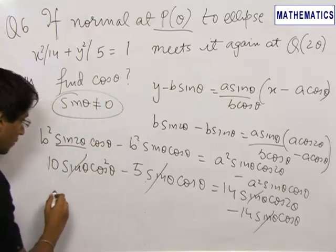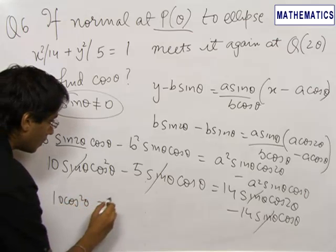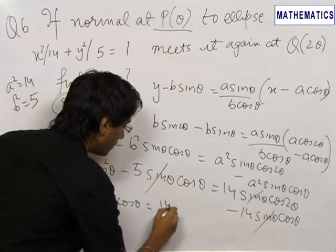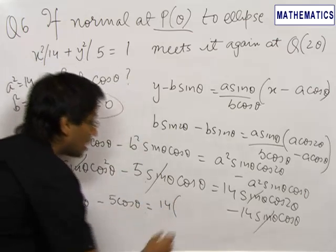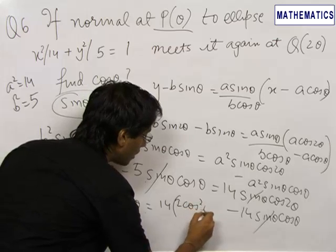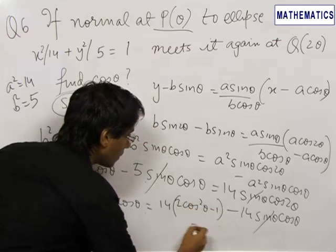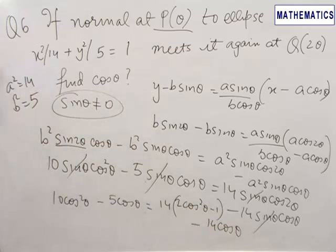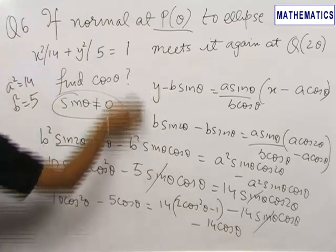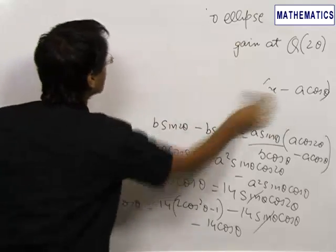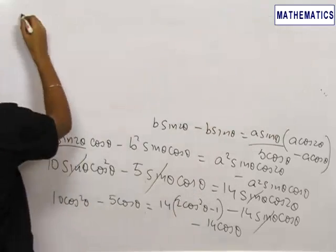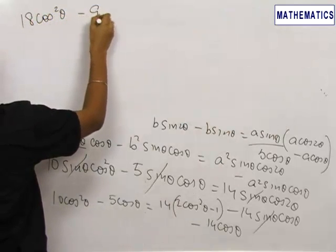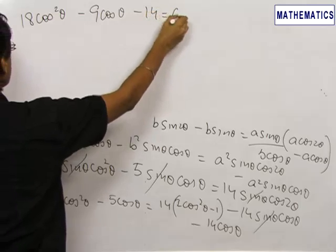Now we have 10 cos²θ minus 5 cosθ equals 14. We write the entire equation in terms of cos²θ, so this becomes 2 cos²θ minus 1 minus 14 cosθ. On rearranging the terms and making a quadratic in cosθ, we get the equation 18 cos²θ minus 9 cosθ minus 14 equals 0.